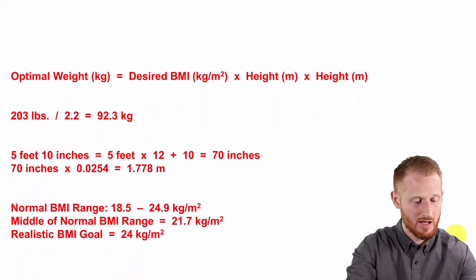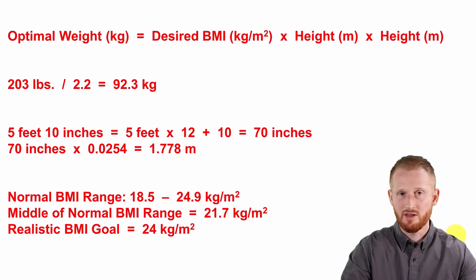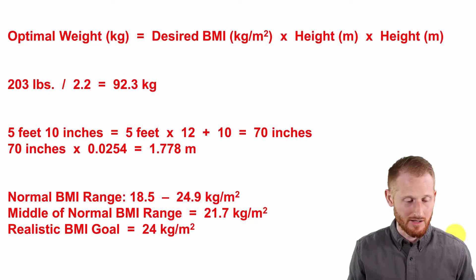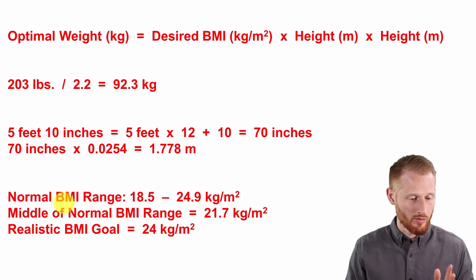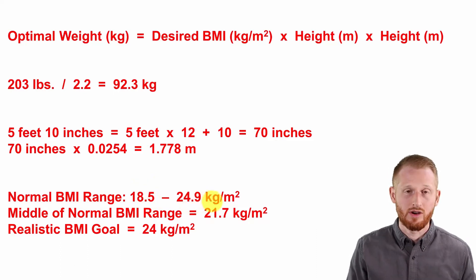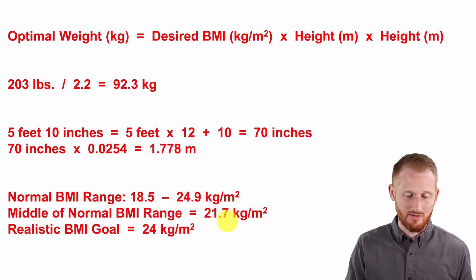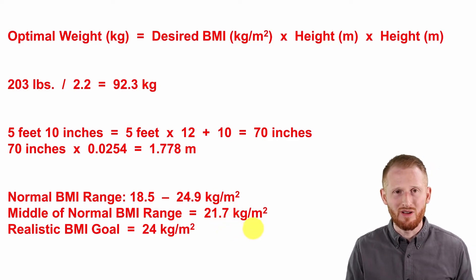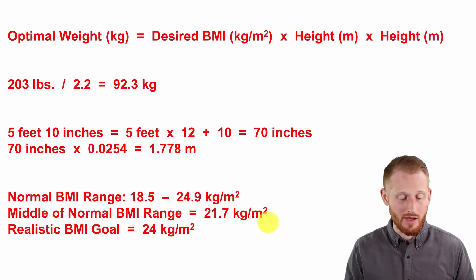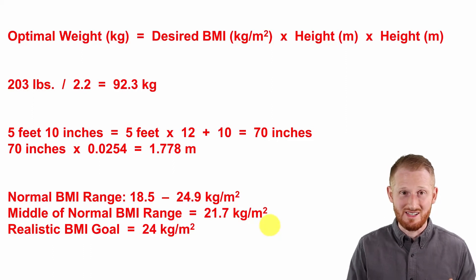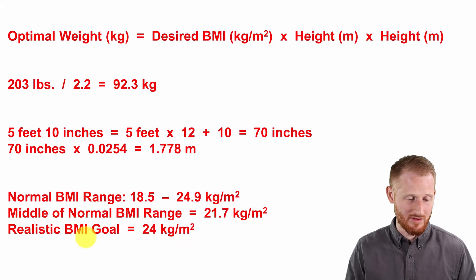Now let's talk about the desired BMI. The normal BMI range — the normal weight range — is 18.5 to 24.9 kilograms per meter squared. The middle of that range, which gives the most cushion from being underweight or overweight, would be 21.7 kg/m². That might be a decent goal, but a more realistic goal is simply to get into the normal range. So let's use 24 kilograms per meter squared as our target BMI.